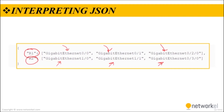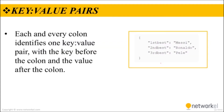To perform the second type of task — where you analyze the JSON data to find the data structures including objects, lists, and key-value pairs — you need to know a bit more about JSON syntax. Let's go ahead with key-value pairs. In JSON syntax, each and every colon identifies one key-value pair, with the key before the colon and the value after the colon.